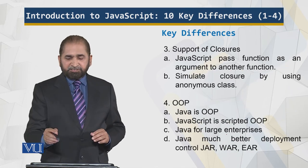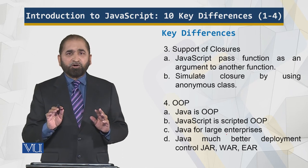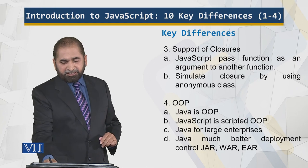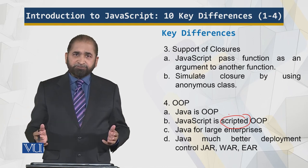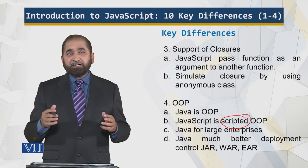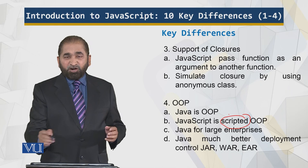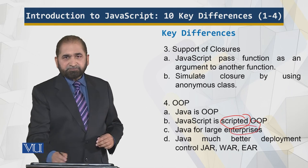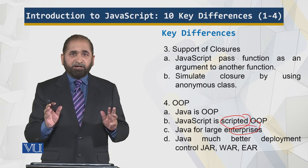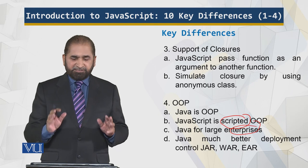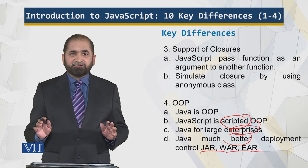Regarding closures: JavaScript can pass a function as an argument — that is not the case for Java. Java follows a pure object-oriented programming paradigm; JavaScript is scripted and uses a scripted OOP approach — they are different. Java is used to develop large, powerful, stable systems — entire enterprise systems are built with Java. JavaScript is not used for enterprises; it sits closely with CSS and HTML for interactivity within a limited domain. Java is much better deployed and controlled using JAR, WAR, and EAR. They are different animals.